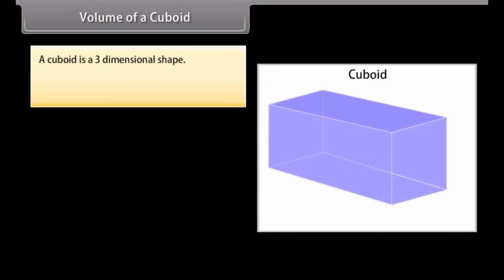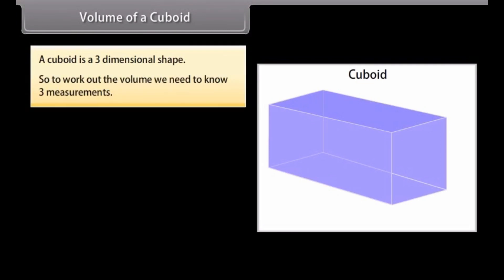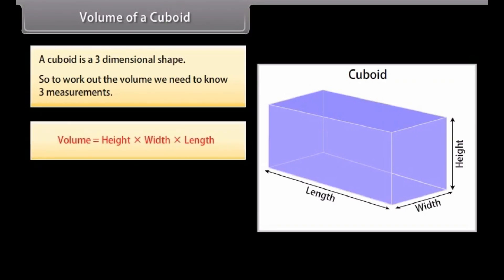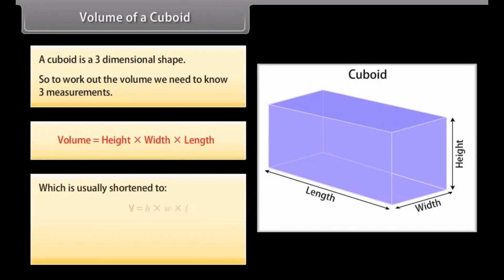A cuboid is a three-dimensional shape, so to work out the volume we need to know three measurements. Look at this shape — there are three different measurements: height, width, and length. The volume is found using the formula V = H × W × L, or more simply V = L × W × H.